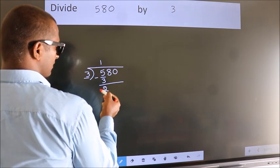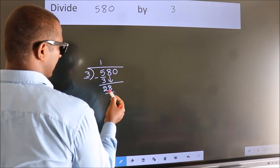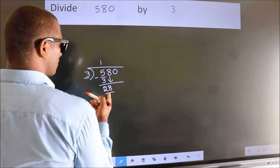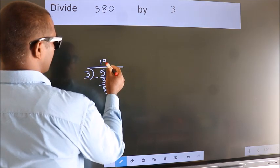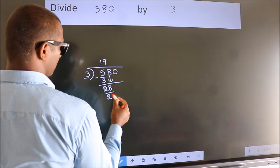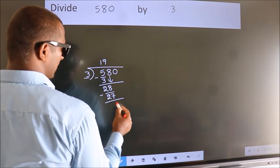After this, bring down the beside number. So, 8 down. So, 28. A number close to 28 in 3 table is 3 9s 27. Now, we subtract. We get 1.